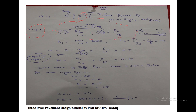In the three-layer system, K1 equals E1 by E2 — meaning the supporting layer of E1 is E2. Similarly, in K2 we divide E2 by E3, the layer supporting E2. So we obtain both K1 and K2. K1 equals 600 divided by 30, which is 20. K2 equals 30 divided by 15, which is 2. These are the important parameters needed to determine ZZ1.